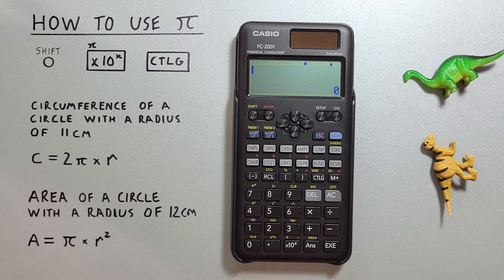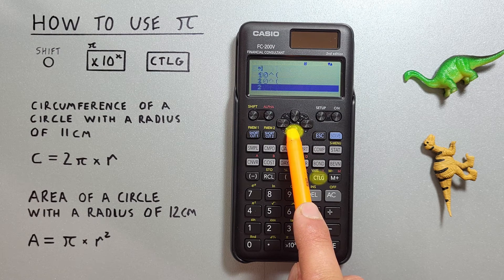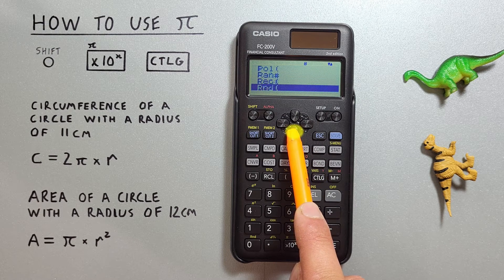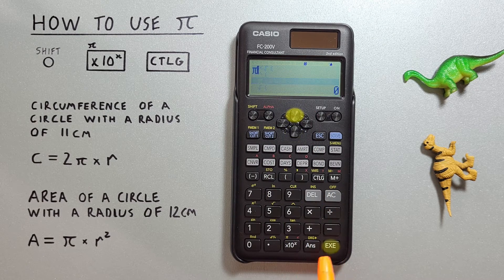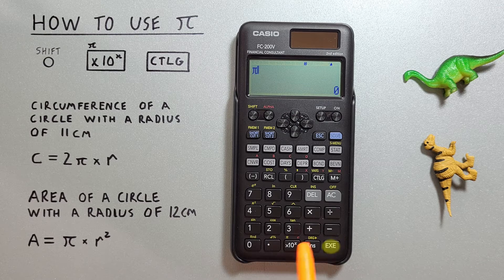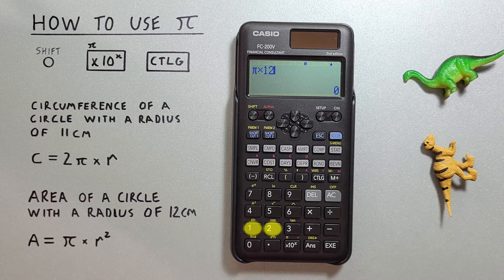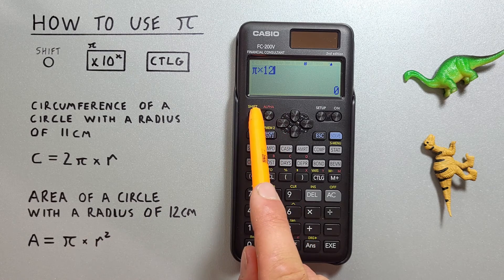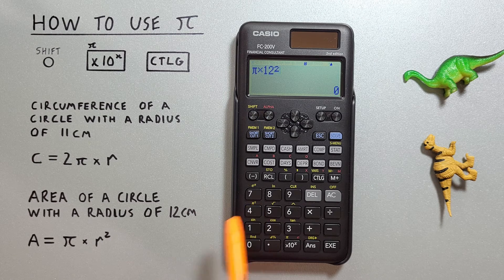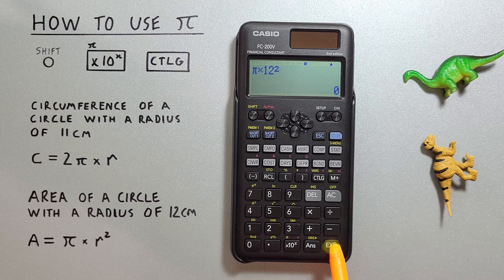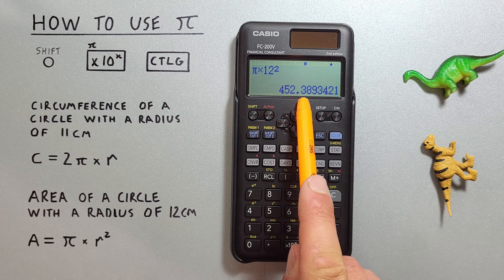Again, we need to put Pi on our screen. For this example, we use the catalog, scroll all the way down, and select it from the menu, times our radius, which was 12, and then squared, which we get by going shift 4 to get the shift function of x squared, hit exe, and we get an area of 452.389 etc.